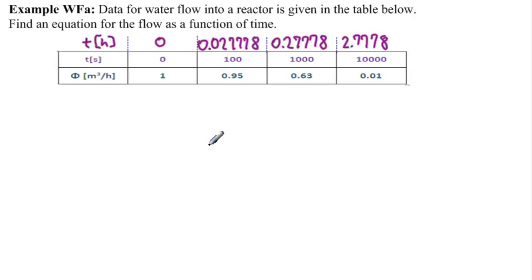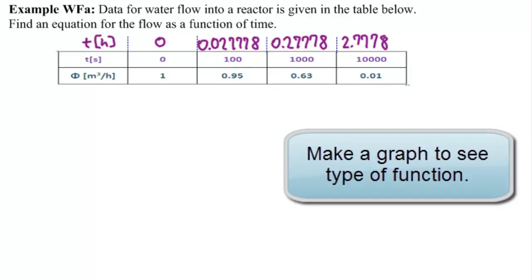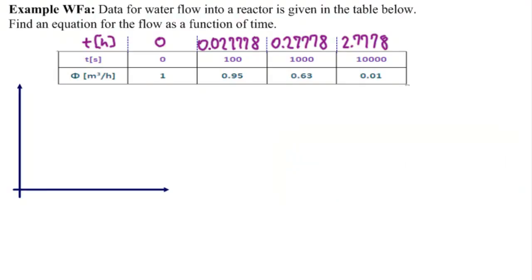So now, in order to make an equation for the flow as a function of time, we need to graph this data on a graph to see what kind of function we're looking at. So let's pull up a Cartesian graph. And what do we have? We have that T goes from 0 to somewhere around 3.